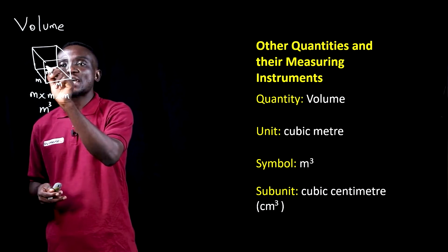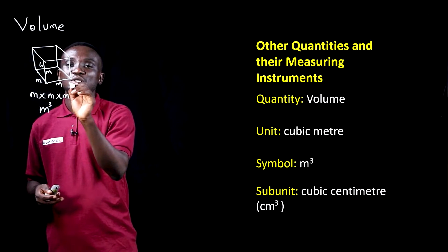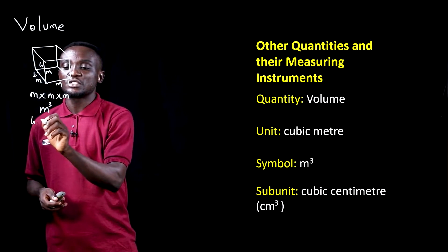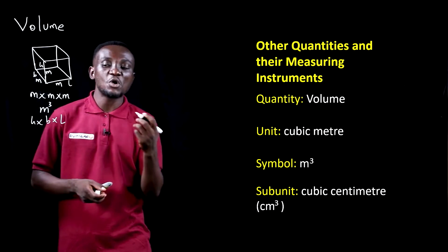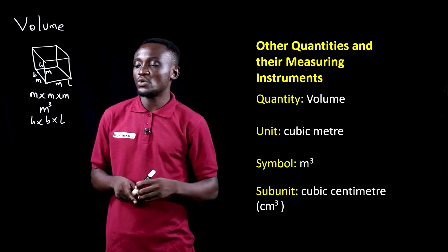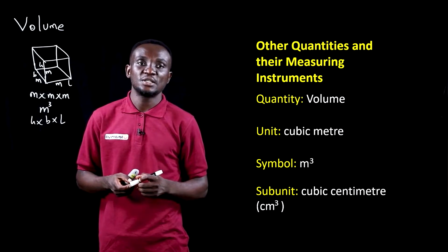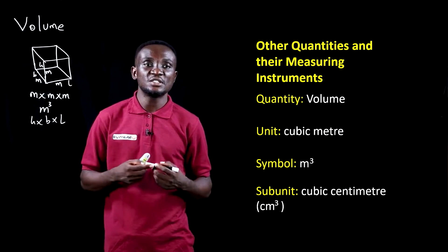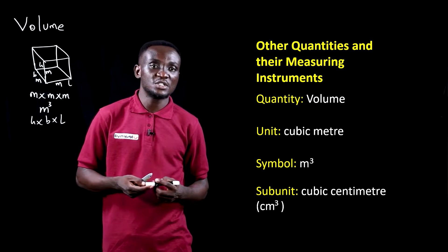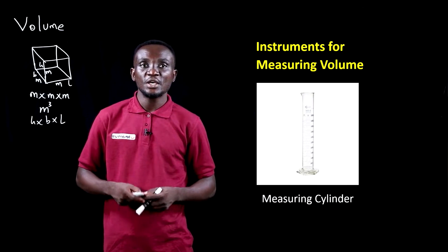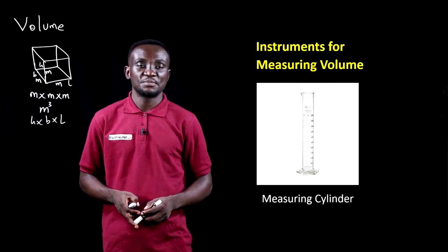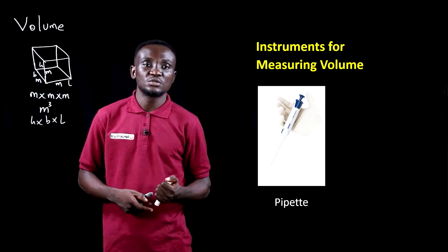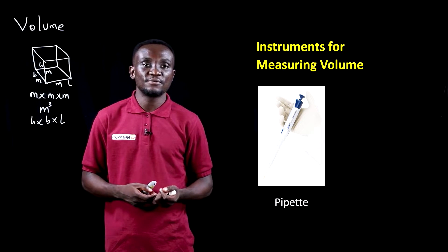If the shape was a cuboid, we'd use the height, length, and breadth — H, B, and L. Because each of those is also measured in meters, we still end up with meter cubed as the unit. The subunit is the cubic centimeter, used when measurements are in centimeters. The instruments for measuring volume are the measuring cylinder, and the pipette for measuring small quantities of liquids.